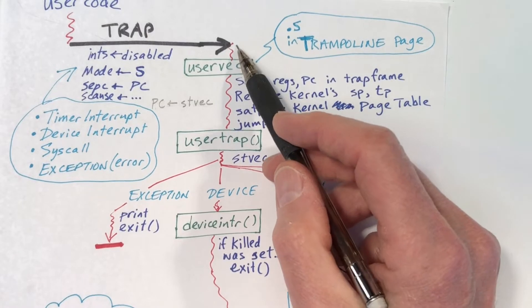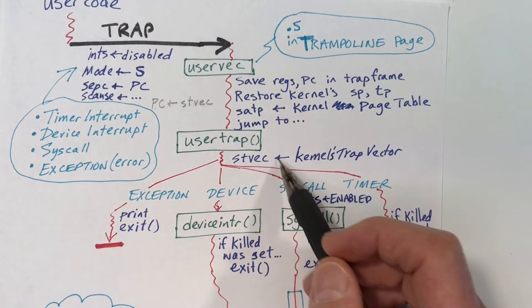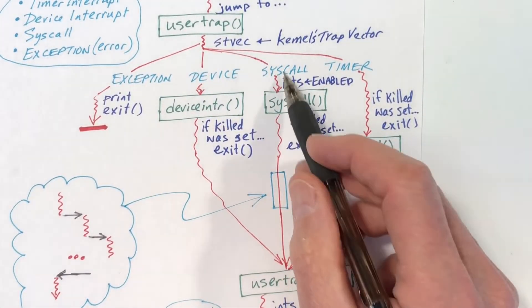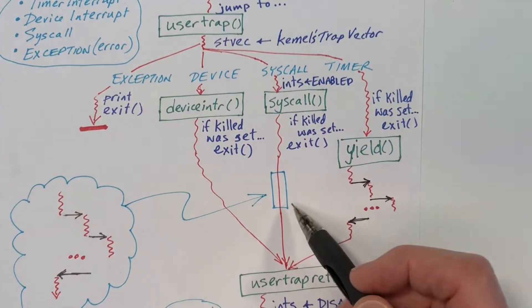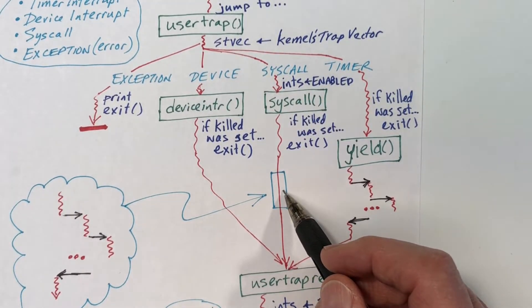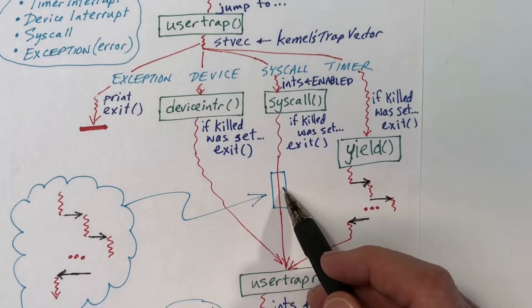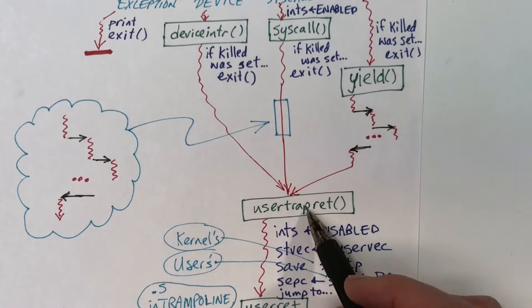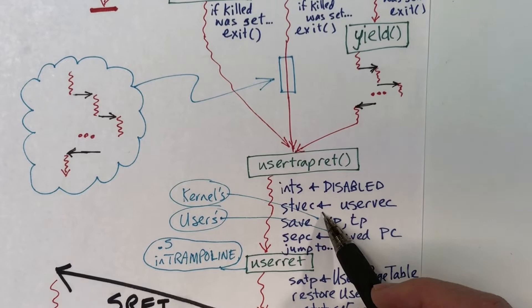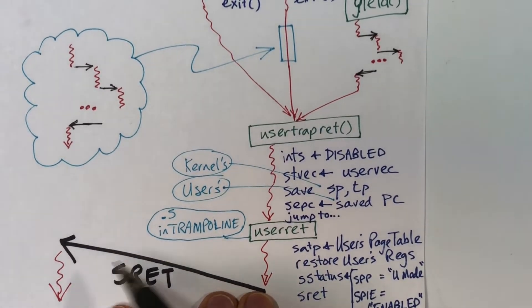When the trap occurs, interrupts are disabled, so if a device interrupts anywhere along this pathway until interrupts are re-enabled, that interrupt will remain pending. You see that interrupts are enabled along the pathway that deals with the system call, so while the process is executing the code that implements the system call, interrupts are enabled and we may get an interrupt. If we do, we will go off and deal with it by executing the device handler, then come back to complete the system call, and then come down to usertrapret. The first thing we do in usertrapret is disable the interrupts, and then restore STVEC to point to uservec, so that when we are executing in user mode, the next trap will go to uservec as it should.